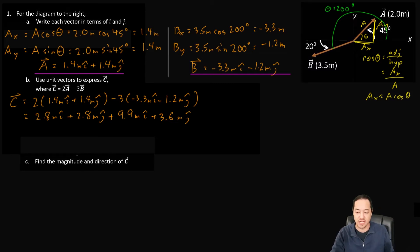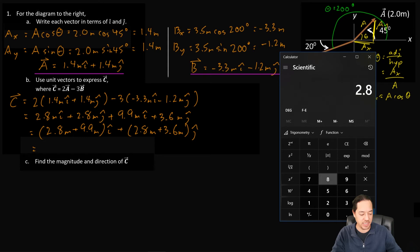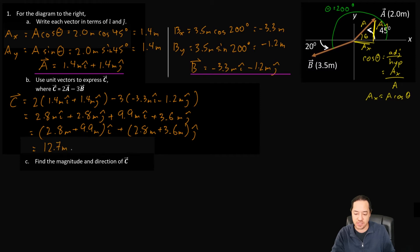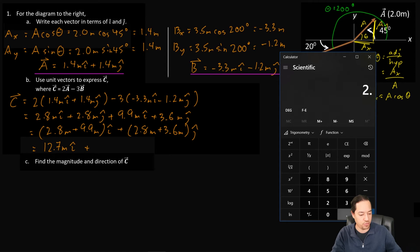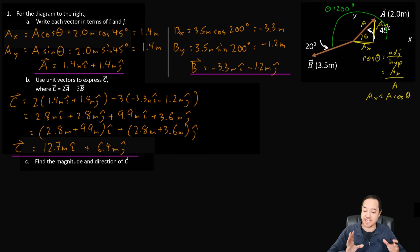Now we combine the i-hat and j-hat terms. We get 2.8 meters plus 9.9 meters in the i-hat direction, and 2.8 meters plus 3.6 meters in the j-hat direction. So doing that final math: 2.8 plus 9.9 is 12.7 meters in the i-hat direction, and 2.8 plus 3.6 is 6.4 meters in the j-hat direction. So c equals 12.7 meters i-hat plus 6.4 meters j-hat.